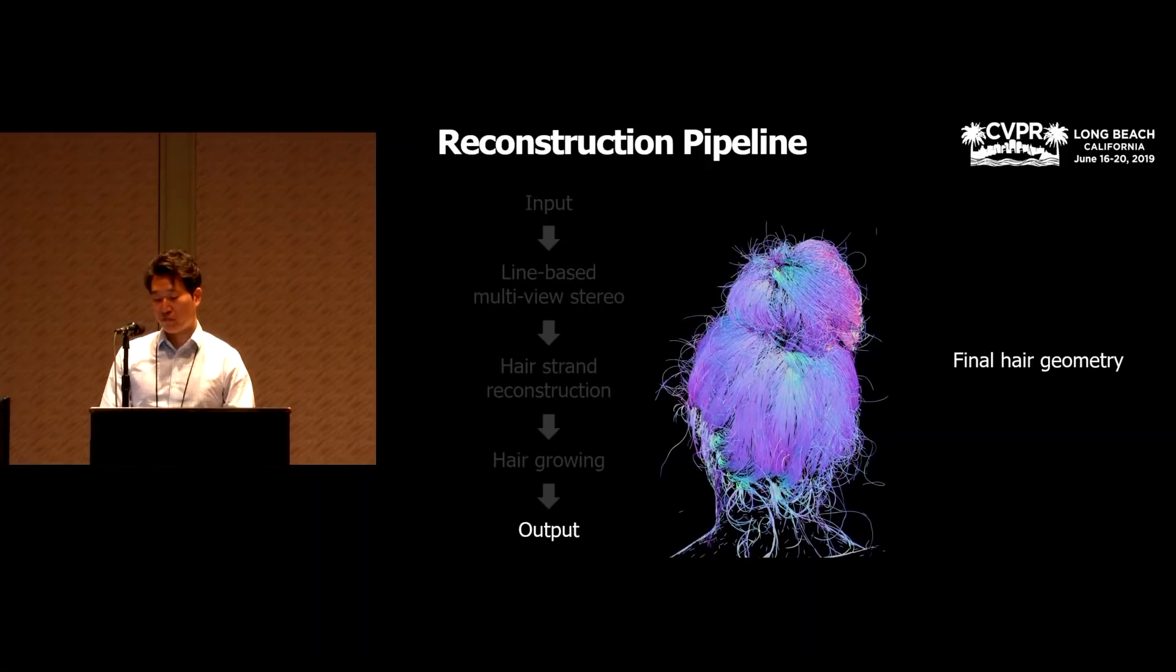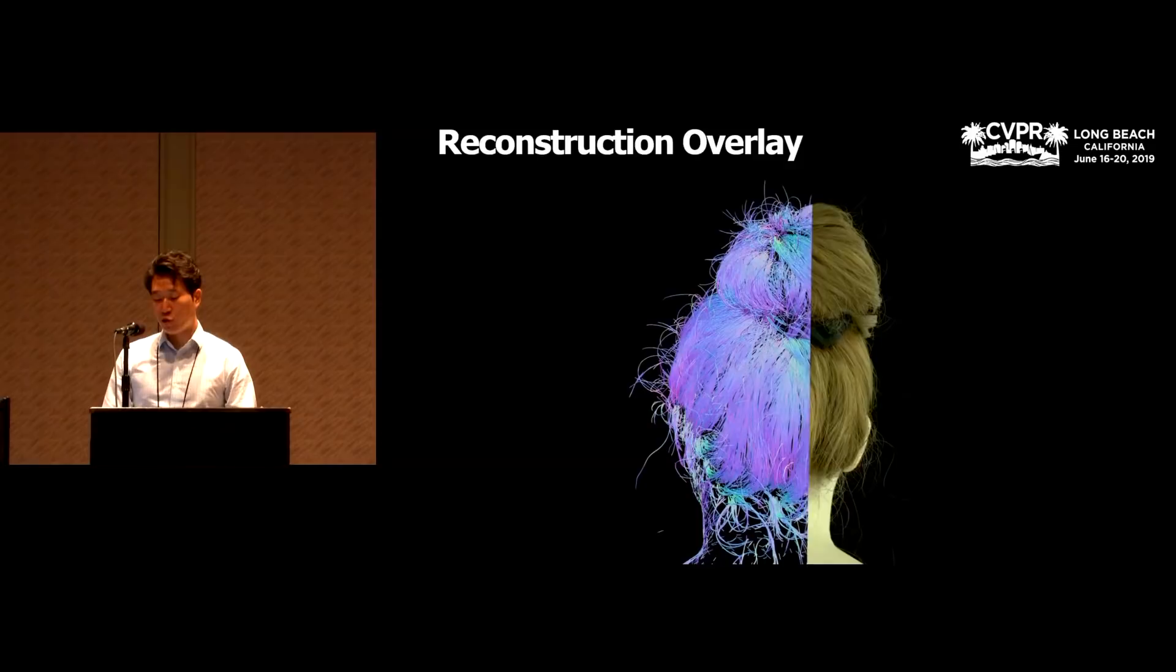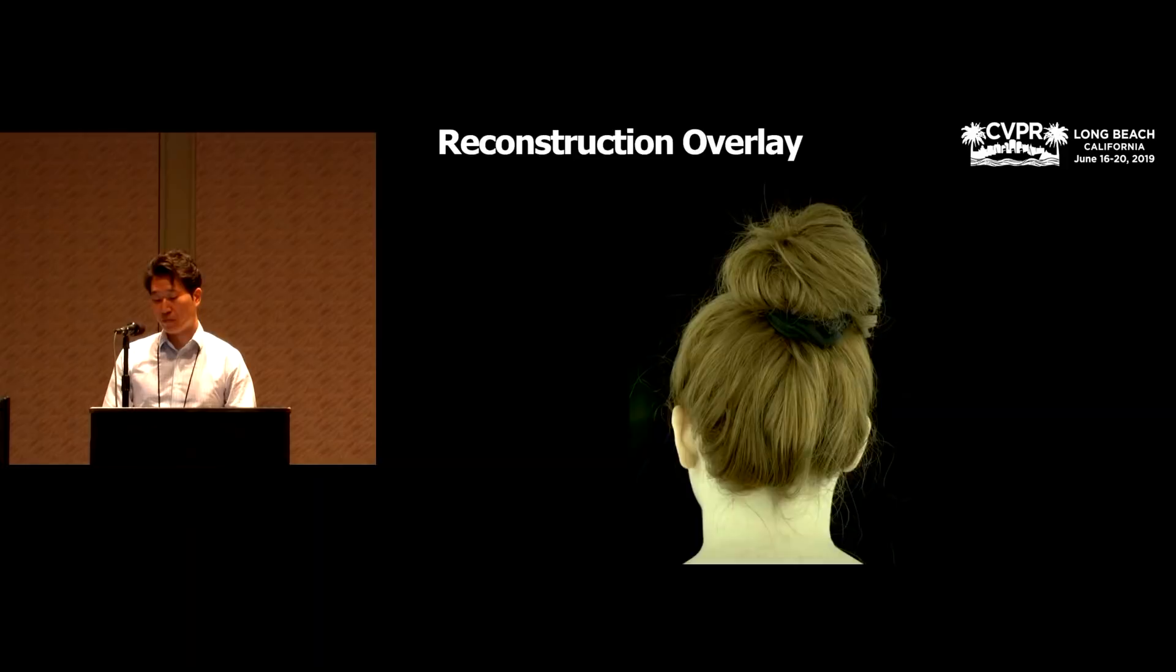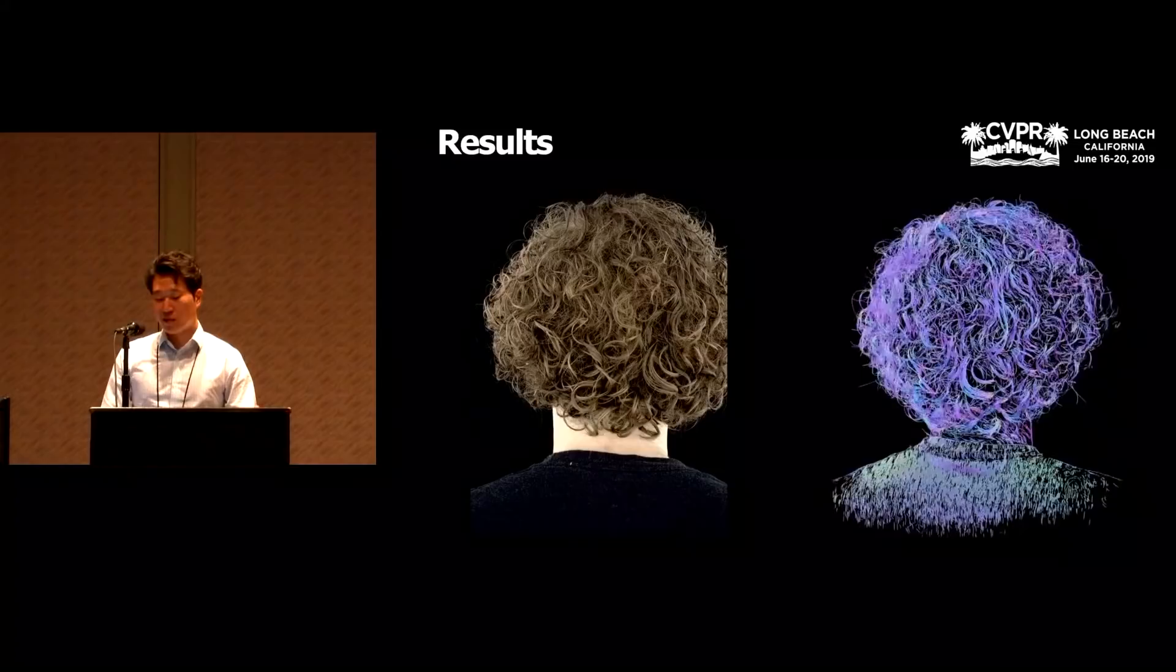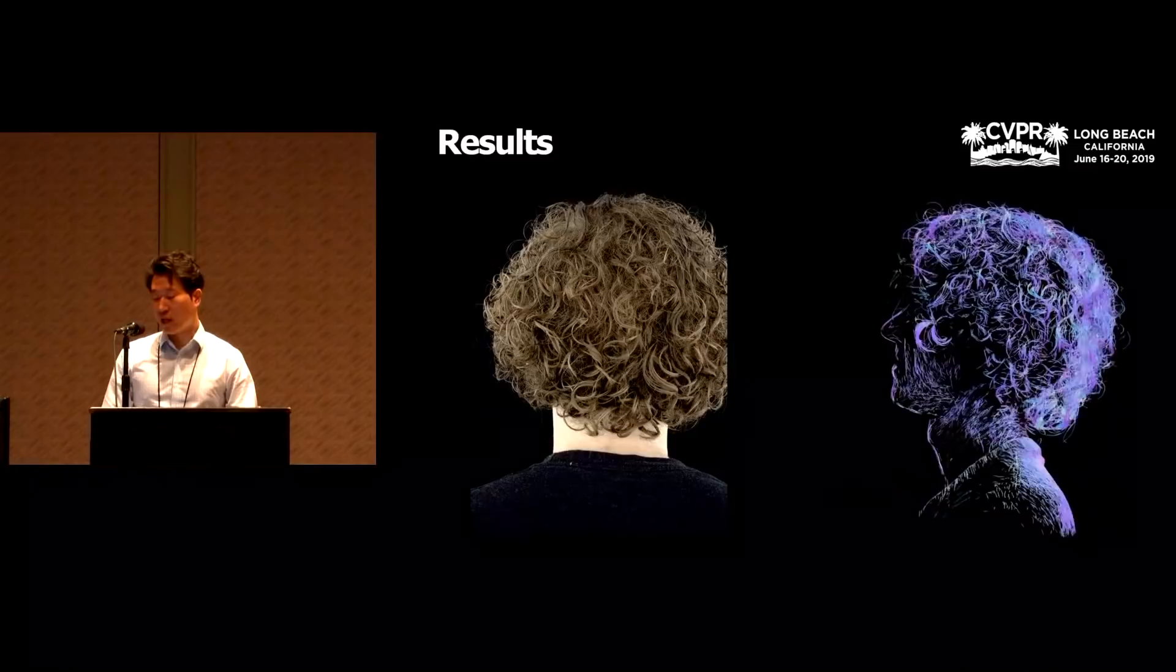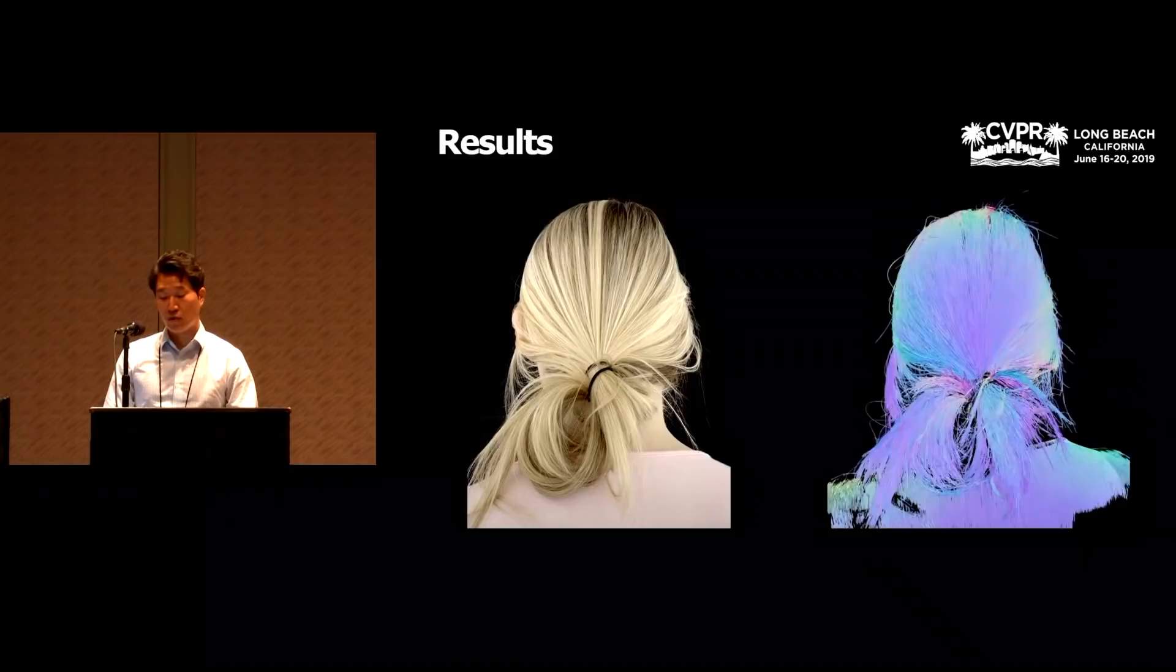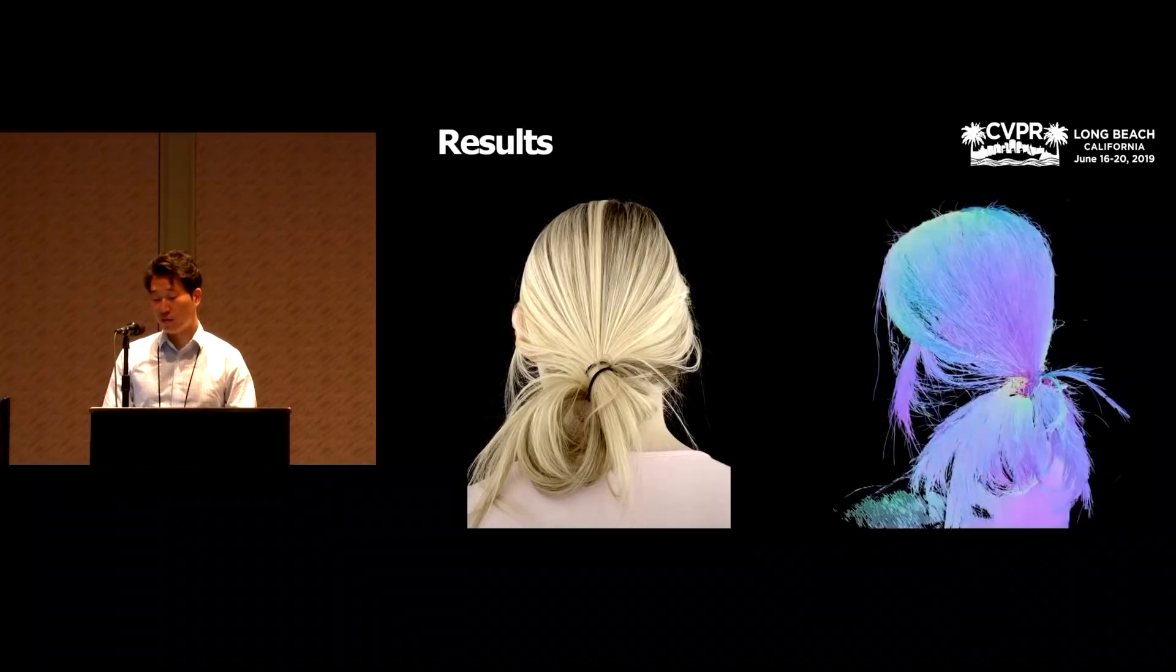We then grow the hair to elongate short strands and recover missing strands. This step significantly increases the reconstruction completeness. And we get the final hair geometry. Here we show the reconstruction overlay between a captured image and the reconstructed geometry. Our method can accurately model all the flying hair strands as well as the overall shape. Here's another result. Because we do not assume specific types of hair but just reconstruct hair strands, we can easily deal with different types of hair. In this case, the curly hair is well captured using our method.